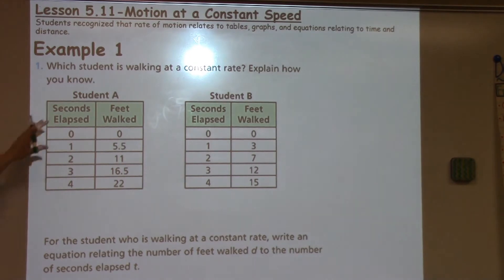Explain how you know. When we look at Student A, we have seconds elapsed and the feet walked: 0, 0; 1, 5.5; 2, 11; 3, 16.5; and 4, 22.